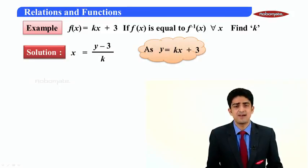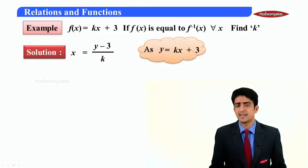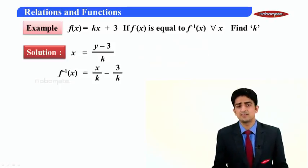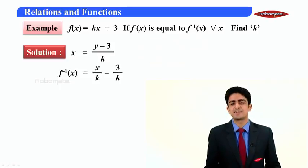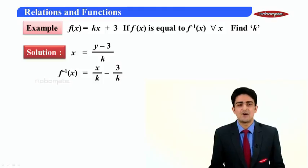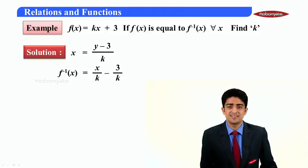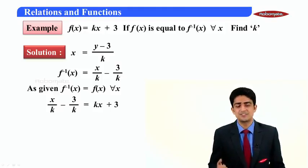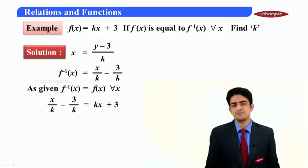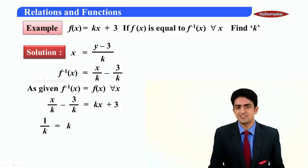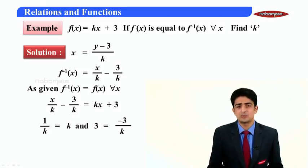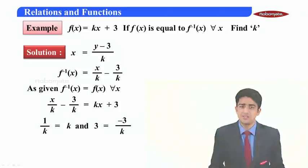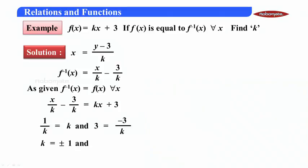And hence we have inverse equal to x/k - 3/k. Now as given f⁻¹(x) is equal to f(x), so this should be equal to this. Now comparing coefficients we have 1/k equal to k and 3 equal to -3/k.